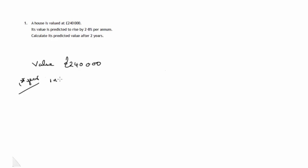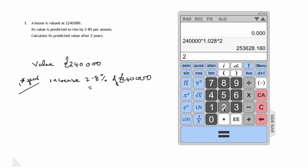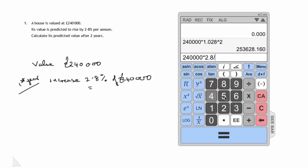The increase in value would be got by working out 2.8% of £240,000, which we can do on the calculator. 240,000 times 2.8% divided by 100 to make it into a number. So there's £6,720.